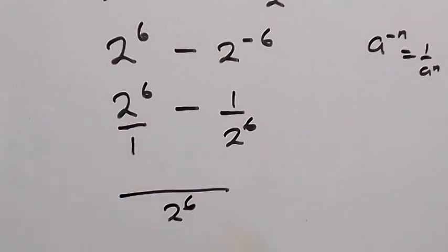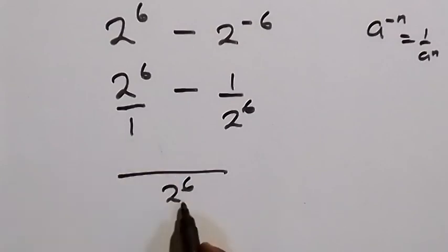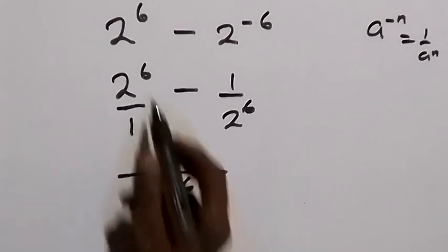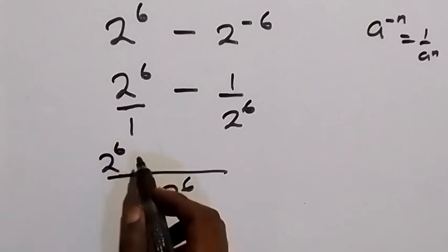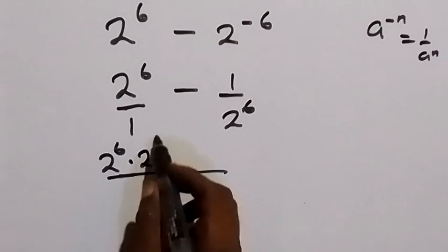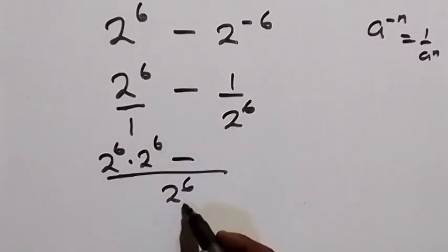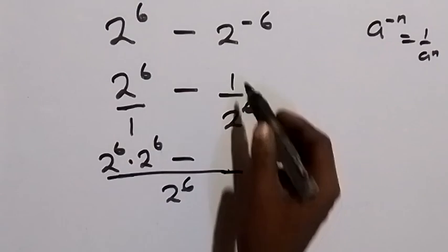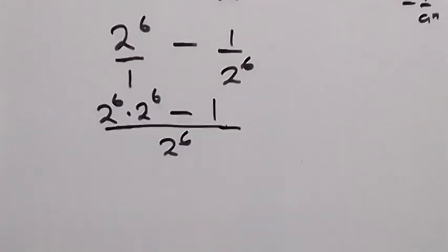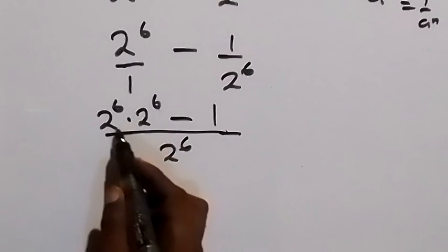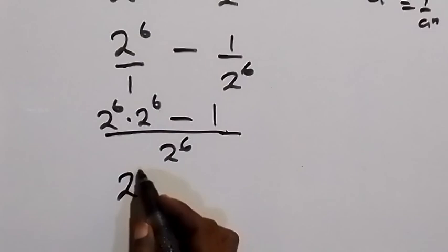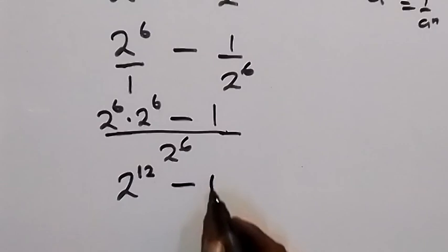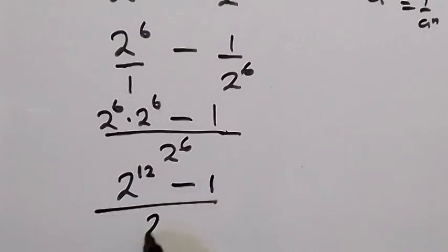Then 1 goes into 2 raised to power 6, giving 2 raised to power 6, and 2 raised to power 6 goes into 2 raised to power 6, giving 1. Applying the law of indices — same base, multiply means we add the powers — this is 2 raised to power 6 plus 6, which is 2 raised to power 12, then minus 1, all over 2 raised to power 6.